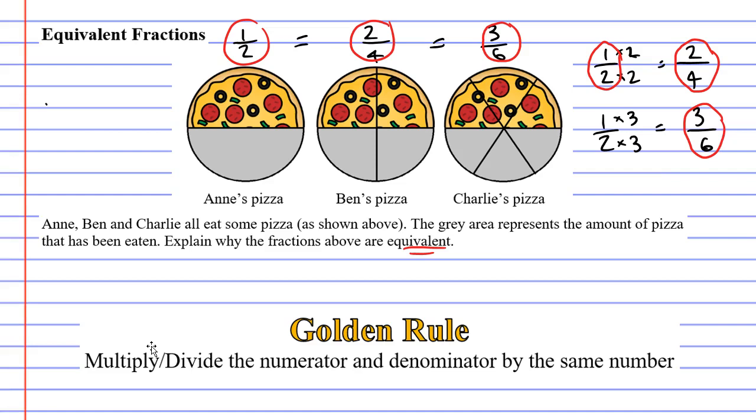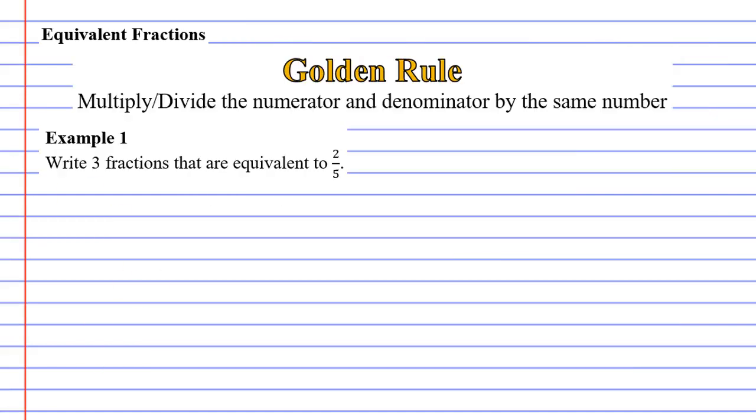The reason I call this the golden rule is that as we go through the fractions topic, we're going to revisit this. If you can master the golden rule, you can solve most fraction problems. Anyway, let's go into Example 1, which wants you to write three fractions that are equivalent to 2/5.